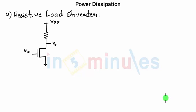Welcome to In 5 Minutes. The agenda of this clip is to identify the power dissipation in a resistive load inverter circuit and in a CMOS inverter. Let's get started with the resistive load inverter.